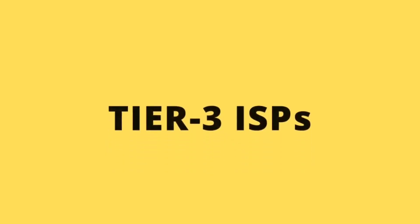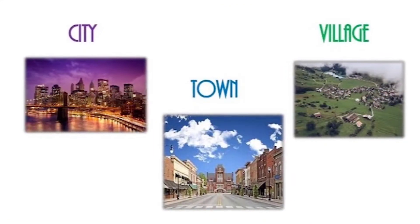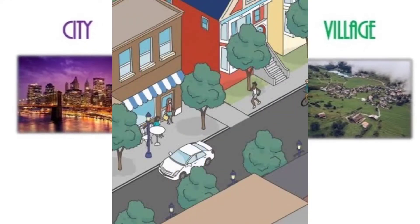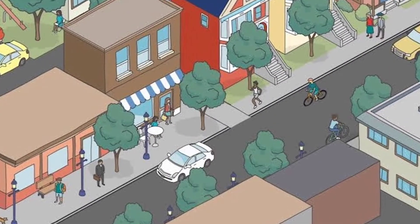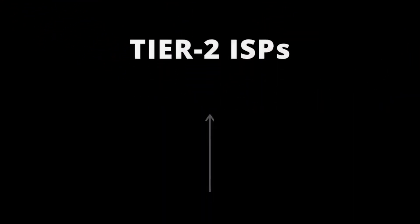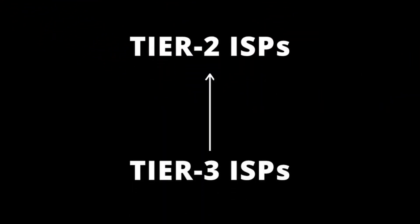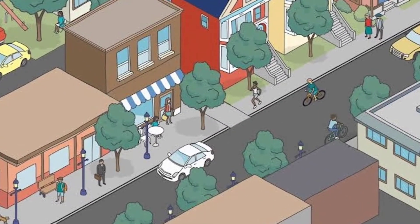Coming to Tier 3 ISPs, these are the smallest ISPs which operate under Tier 2 ISPs, providing different internet services to the different cities, towns, villages, and colonies. Tier 3 ISPs access the internet from Tier 2 ISPs to redistribute them to every nook and corner of the colonies.